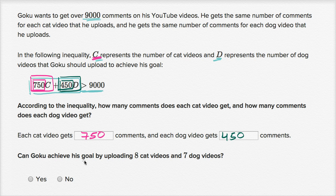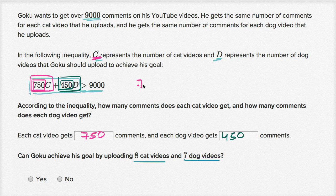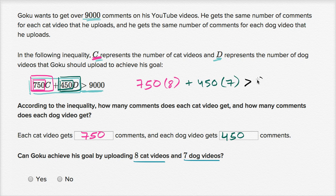Can Goku achieve his goal by uploading eight cat videos and seven dog videos? Let's think about this — eight cat videos, seven dog videos. If we have 750 times eight, plus 450 times seven, is this going to be greater than 9,000? We just have to evaluate this.